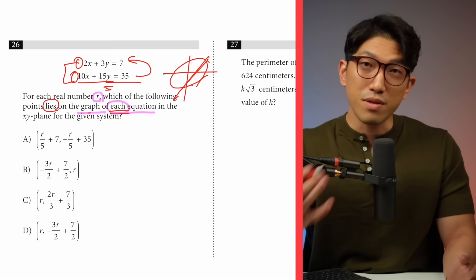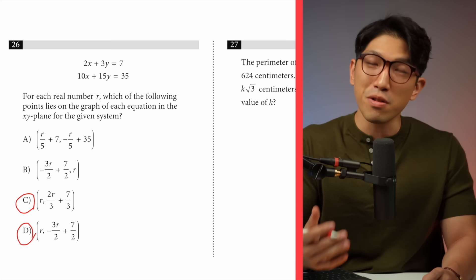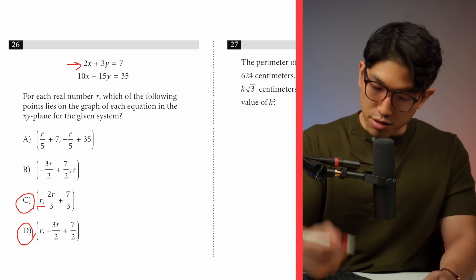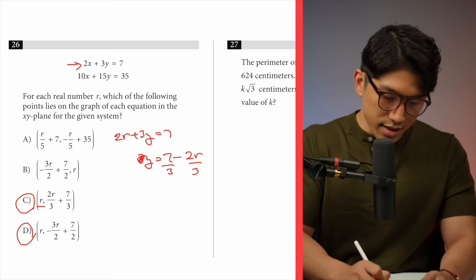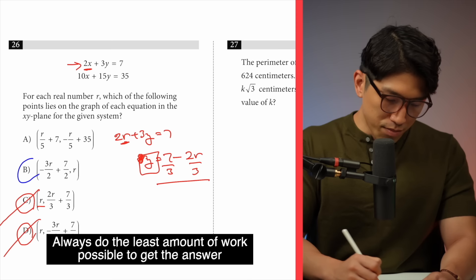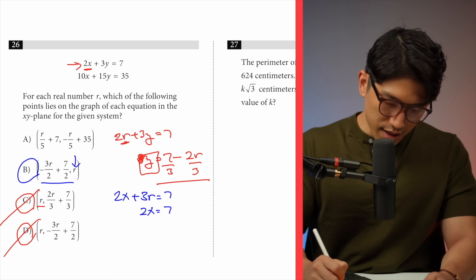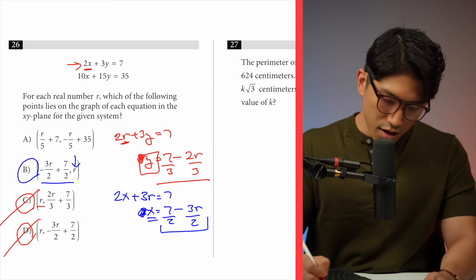To save time, I'll start with choices C and D since they look simpler. Plugging into the top equation, 2x plus 3y equals 7, solving for y gives y equals (7 minus 2r) over 3 when x equals r. Choices C and D don't match, so they're out. Looking at choices A and B, I'll try B first since A looks complicated. Plugging the y value from choice B in: 2x plus 3r equals 7, solving gives x equals (7 minus 3r) over 2, which is minus 3r over 2 plus 7 over 2. That matches choice B, so choice B is the answer.